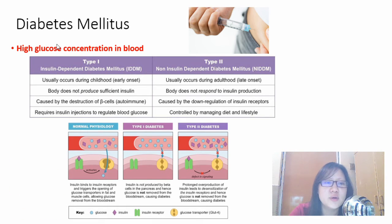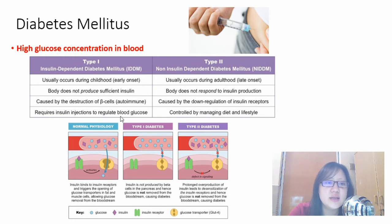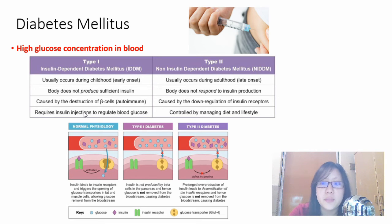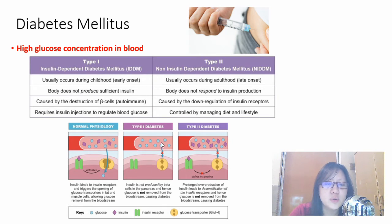Before ending this part, we need to discuss diabetes. Type 1 diabetes is inherited and occurs during childhood because the body does not produce sufficient insulin. This may be due to autoimmunity — the body's immune system attacks its own beta cells — so insulin is not produced and blood glucose concentration remains high. This requires insulin injections to regulate blood glucose. As a result, glucose is not removed from the bloodstream and GLUT proteins are not opened.